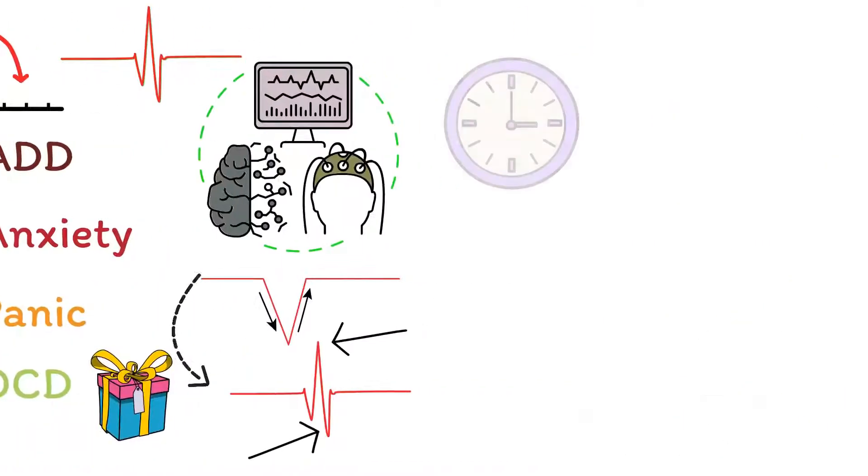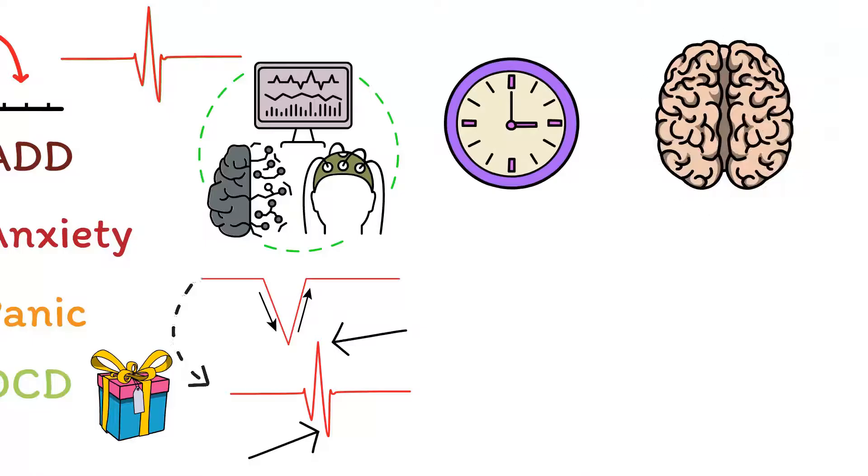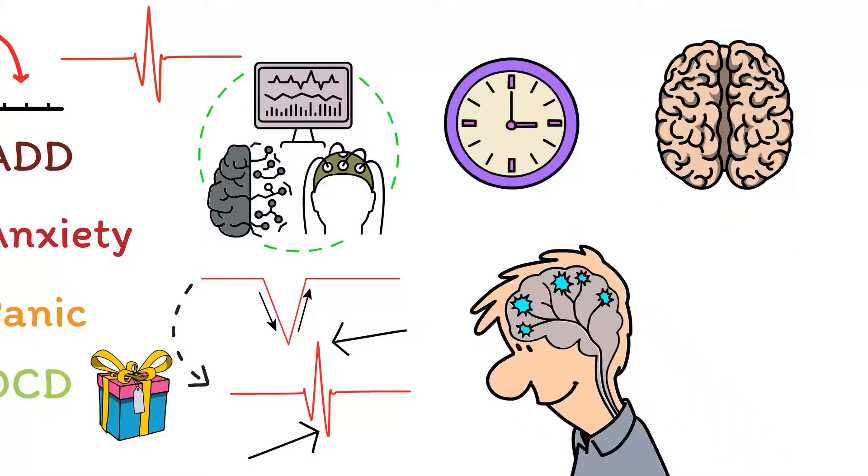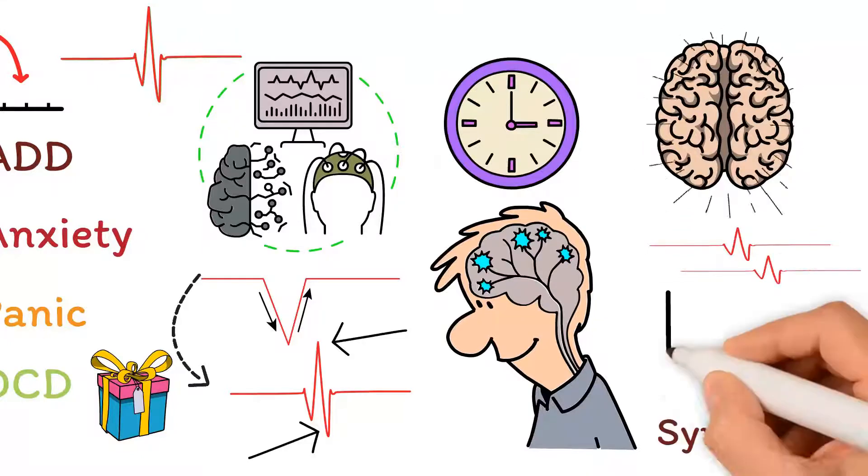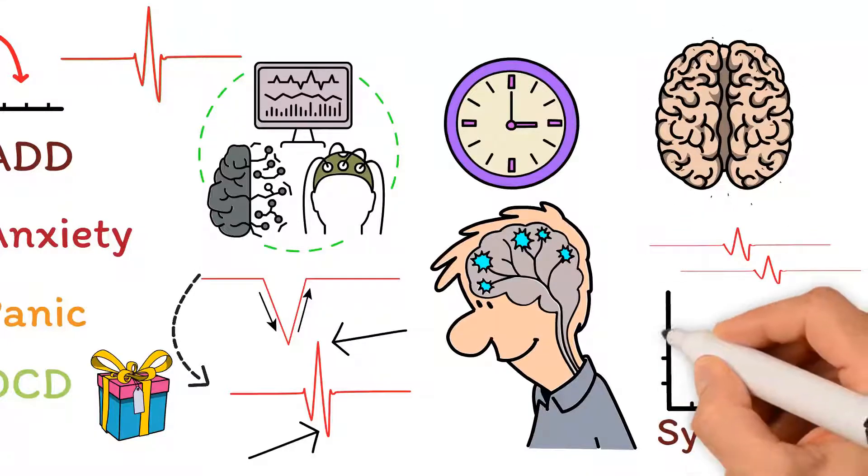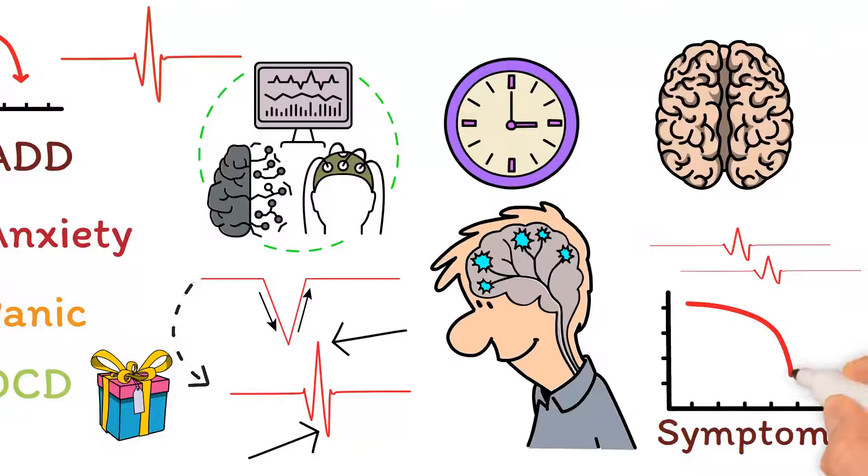Over time, the brain responds to this reward and reorganizes resources and communication patterns to produce a more regulated brainwave. When producing more regulated brainwave patterns, symptoms reduce over time.